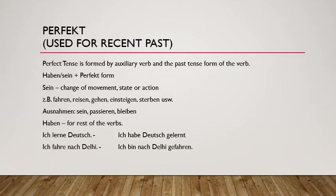'Sein' is used whenever there is a change of movement, state, or action — whenever there is a change from one point to another, or from one state to another. For example: 'fahren' (to drive), 'reisen' (to travel), 'gehen' (to go), 'einsteigen' (to climb into a bus or train), 'sterben' (to die — a change of state). These verbs always take 'sein' as an auxiliary verb.